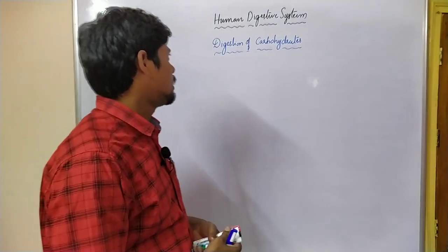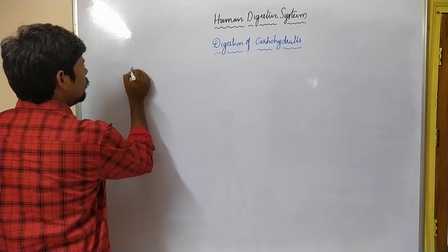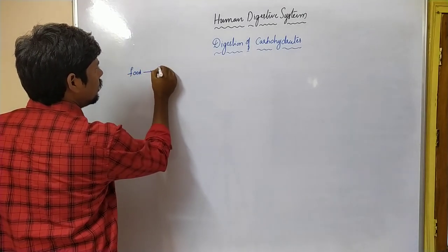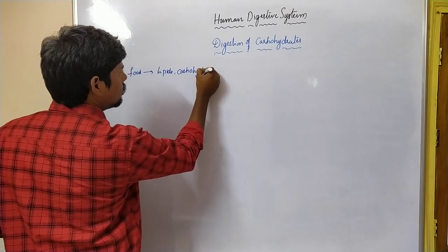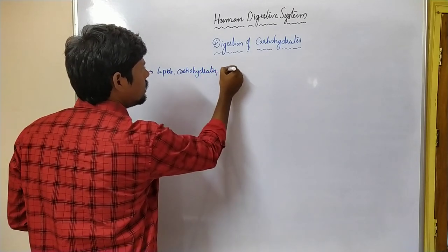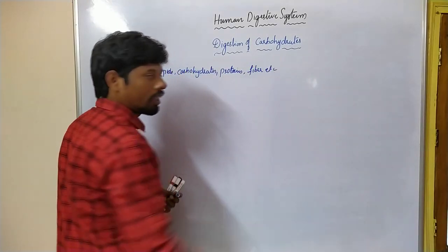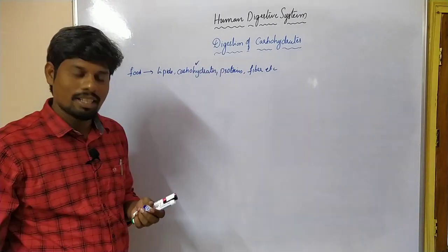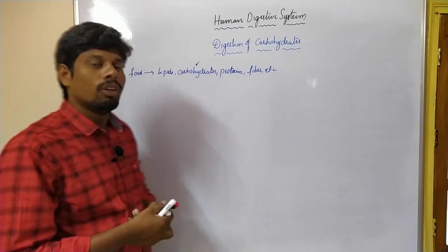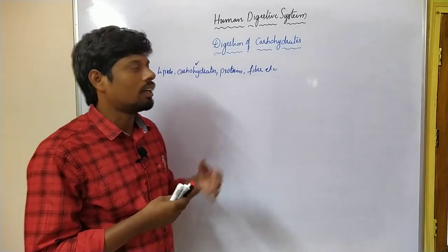In today's class we are going to discuss the digestion of carbohydrates. In the first class I mentioned the food that contains lipids, carbohydrates, proteins, fibres, and so on. Before going to see how digestion of carbohydrates will take place, we have to know some fundamental aspects of the carbohydrates.